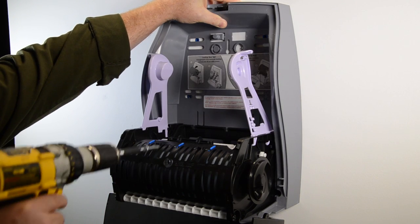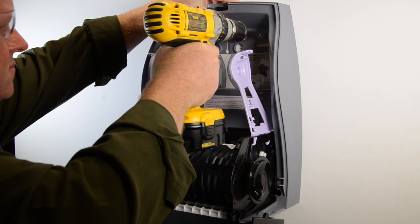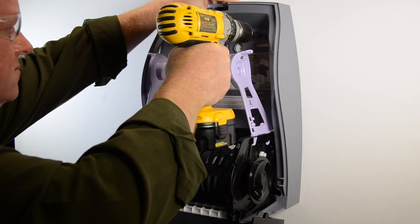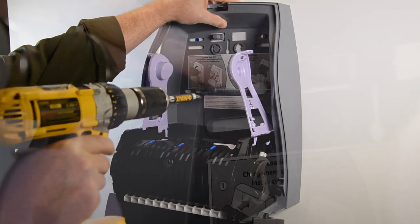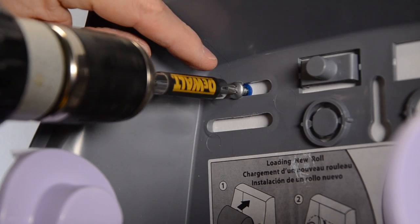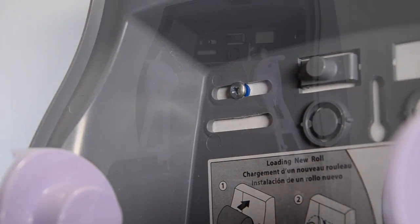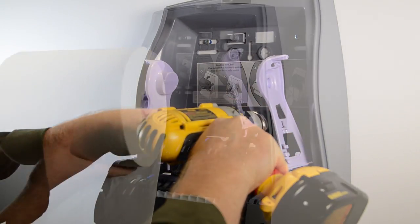Align the dispenser over the anchors and drive the screws into the wall. Use a minimum of four screws. Now you are ready to load the towel roll.